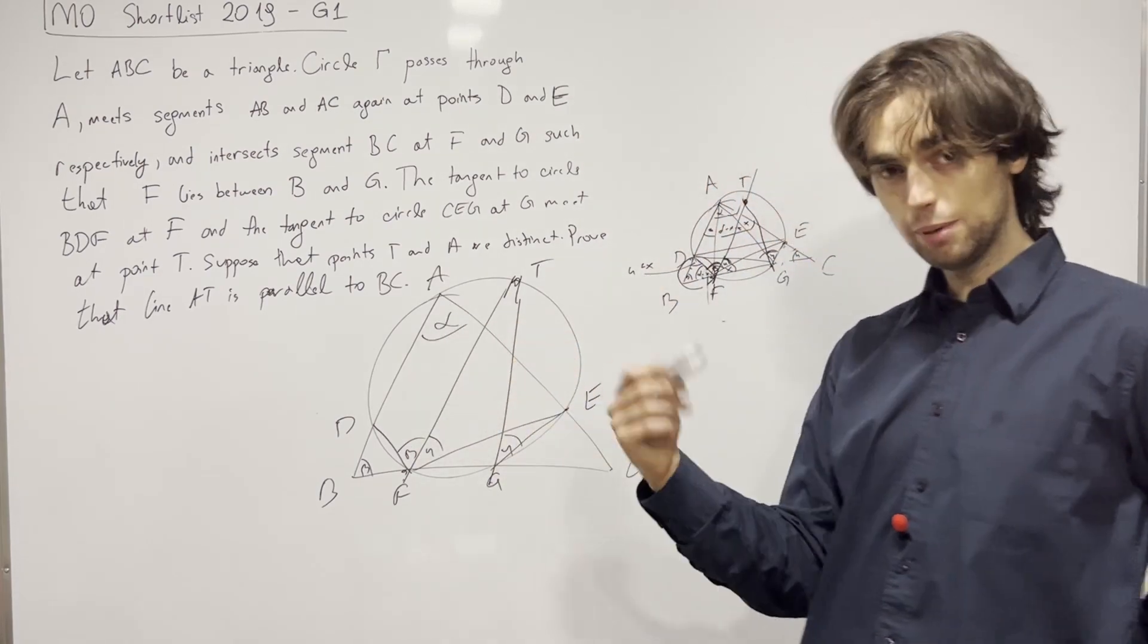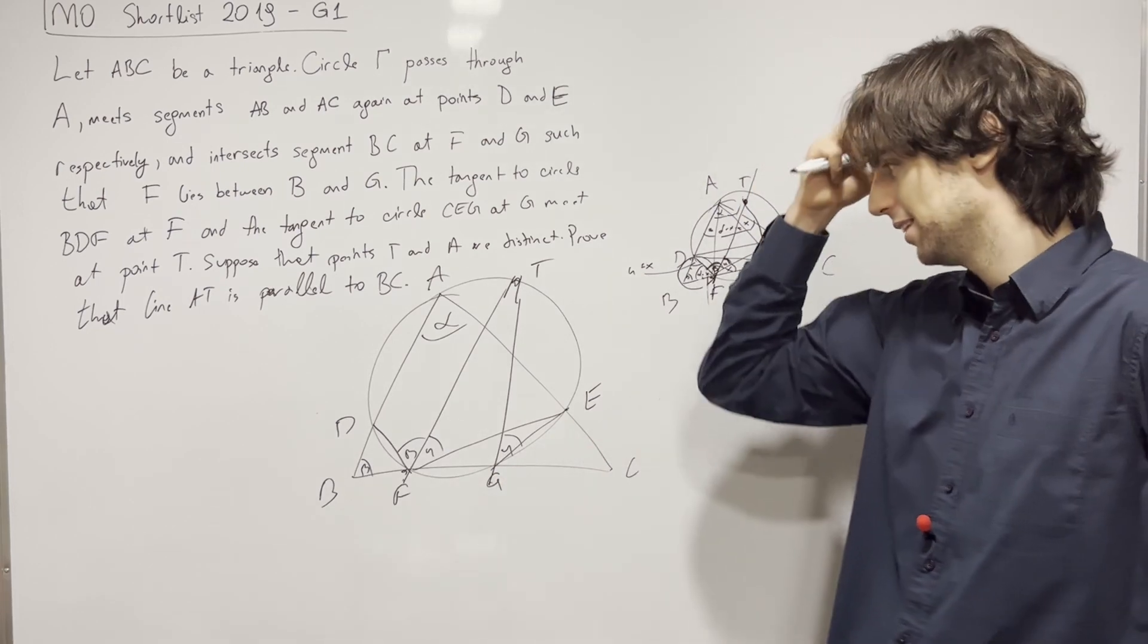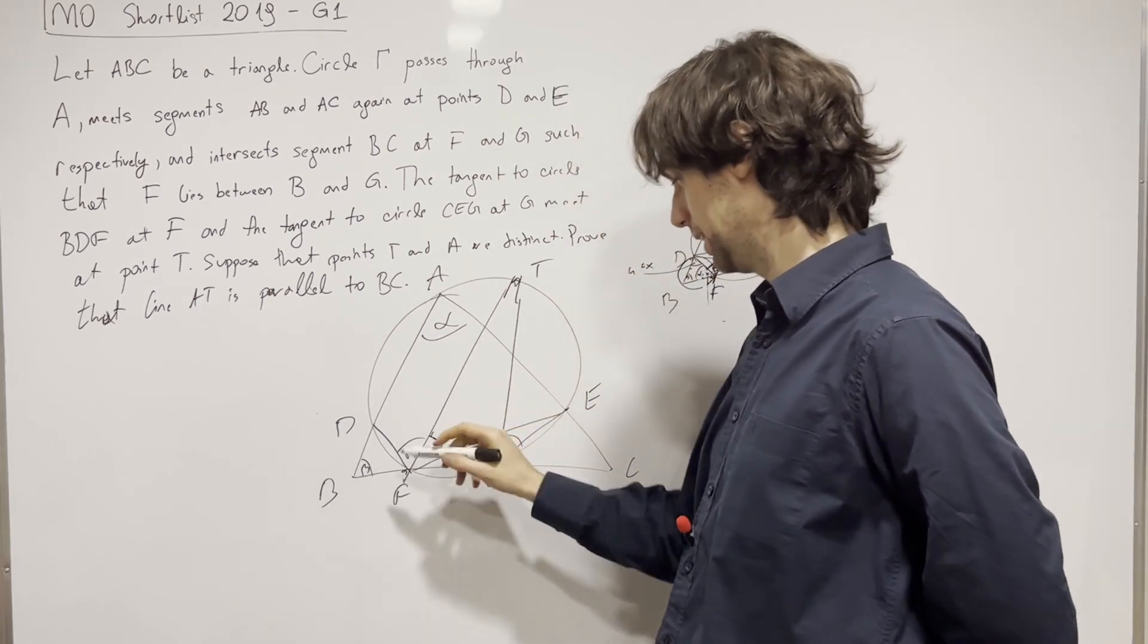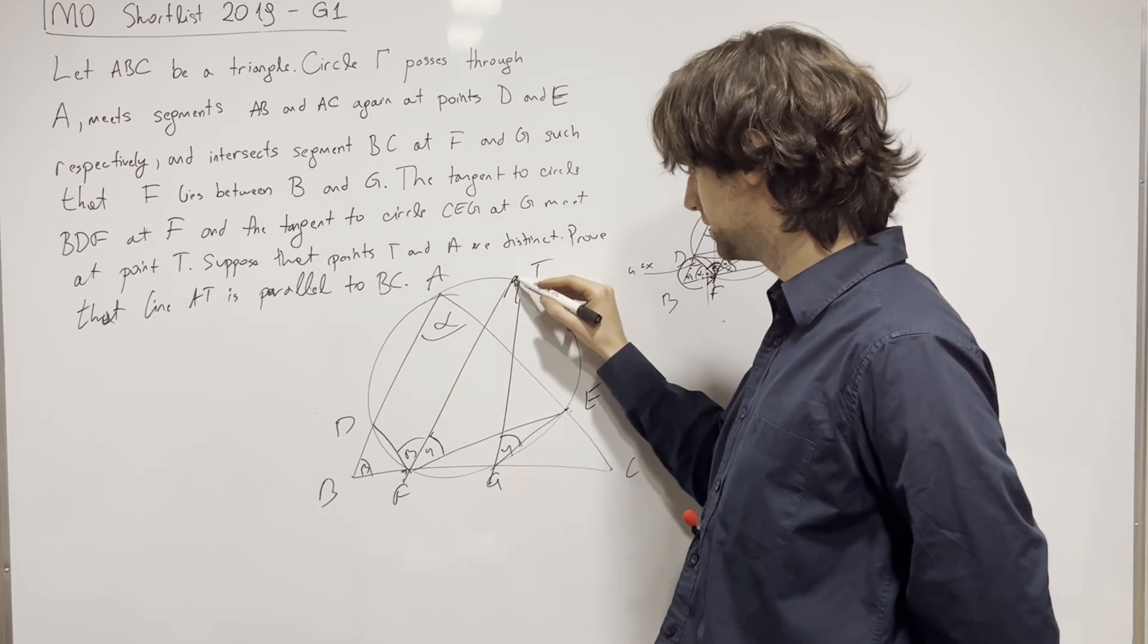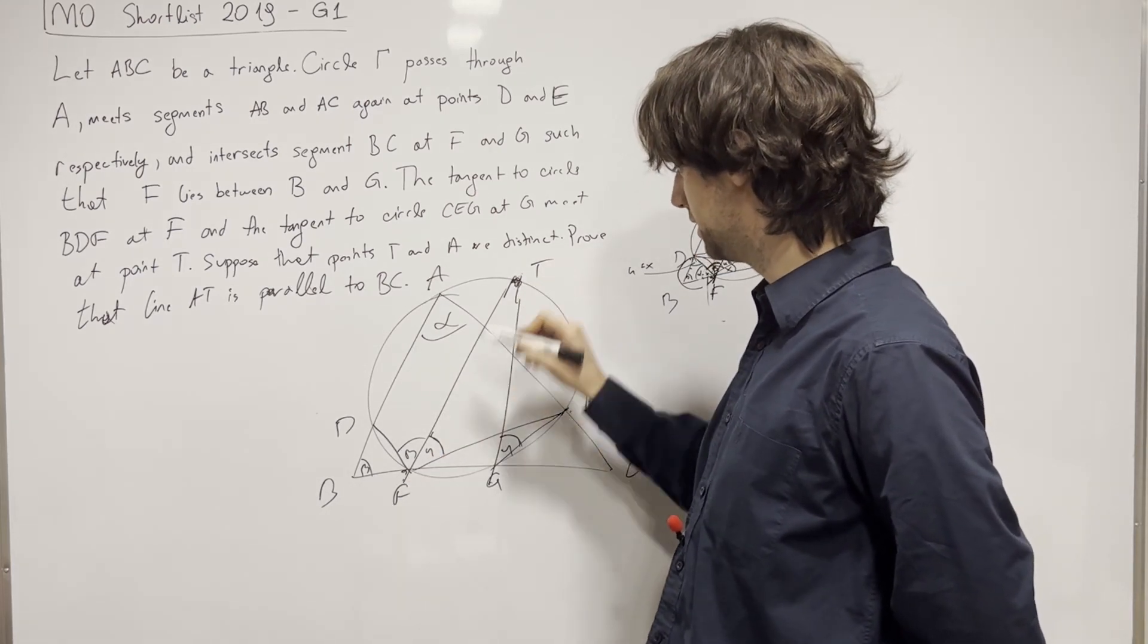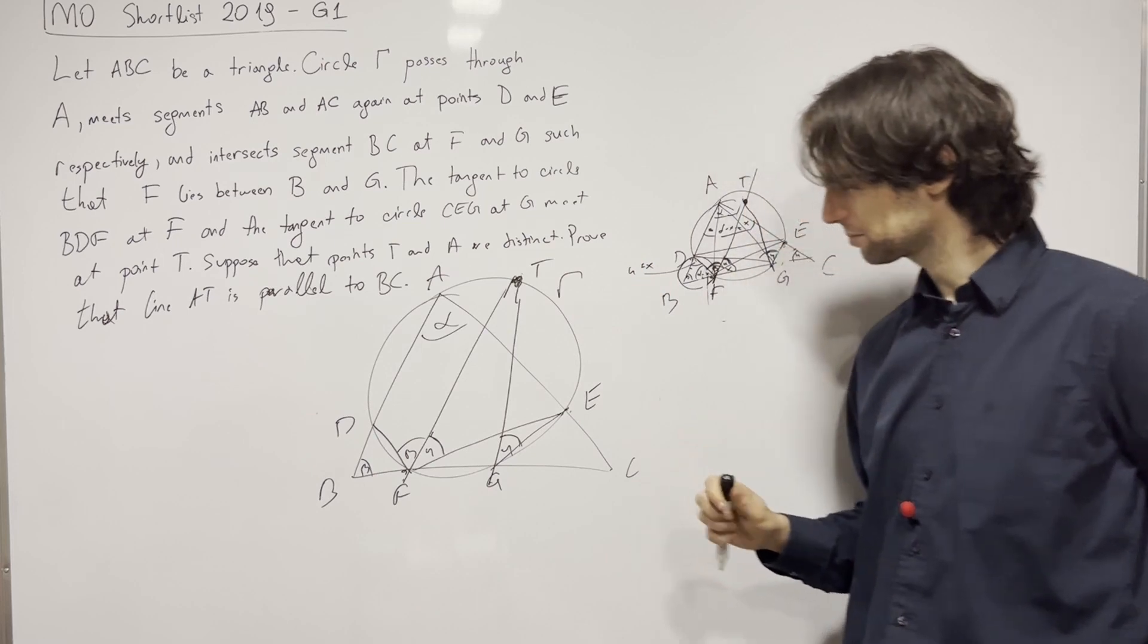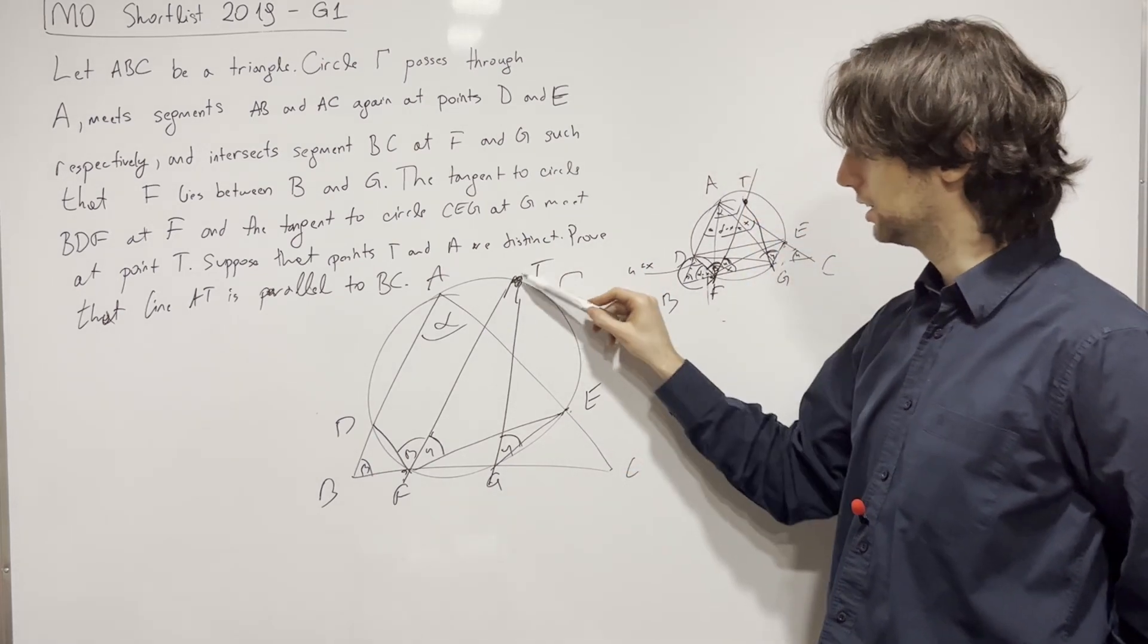And you might also notice this is what a good diagram does to you. It really does help you out. Figure out what's happening in the problem. So now what do you have? You have this as gamma. And you have this as gamma. So you have this angle is equal to this angle right here. So that means that T is on this circle. I don't know what the name of this letter is. But it is on this circle.